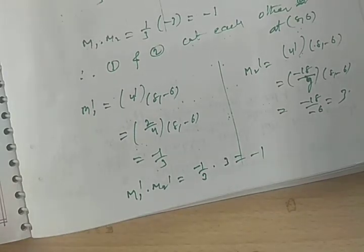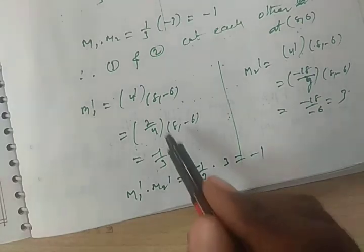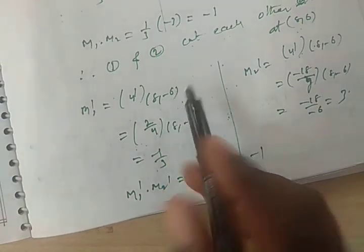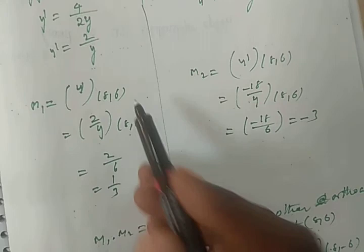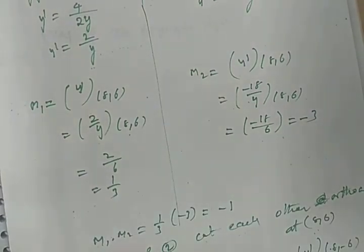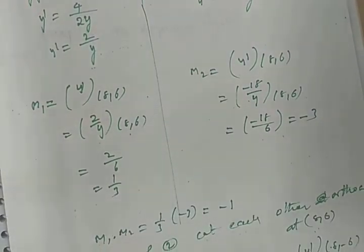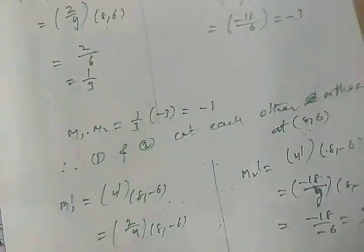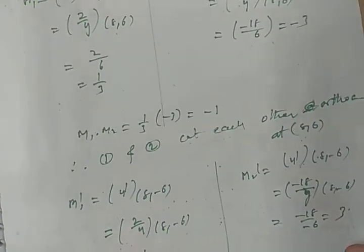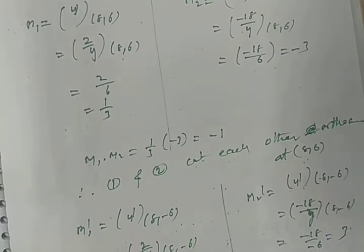Clearly, the given curves cut each other orthogonally at point (8, −6) and at point (8, 6) — meaning at all intersecting points, the given curves cut each other orthogonally. If you like this video, subscribe to my channel for more videos. Thank you.